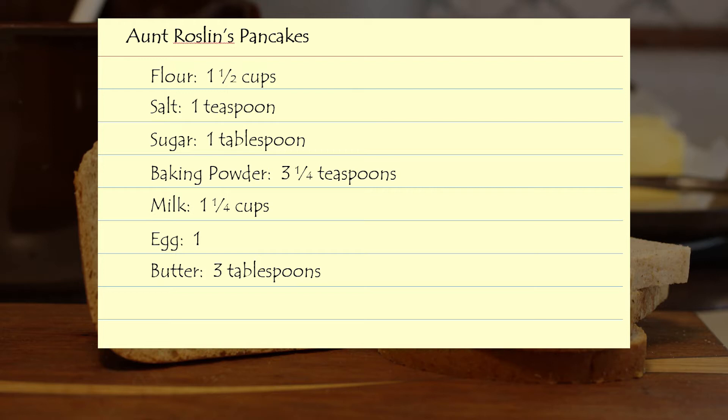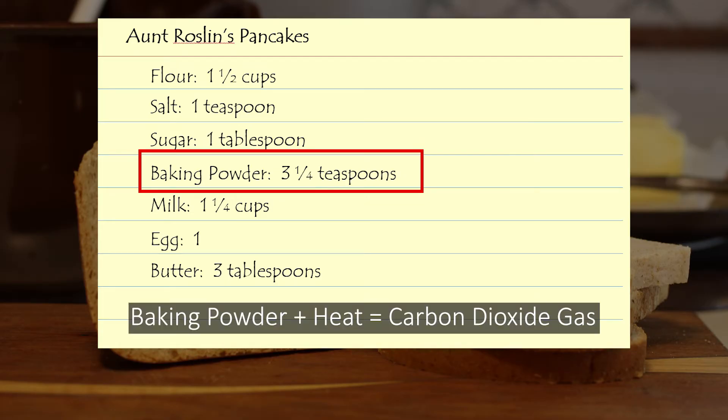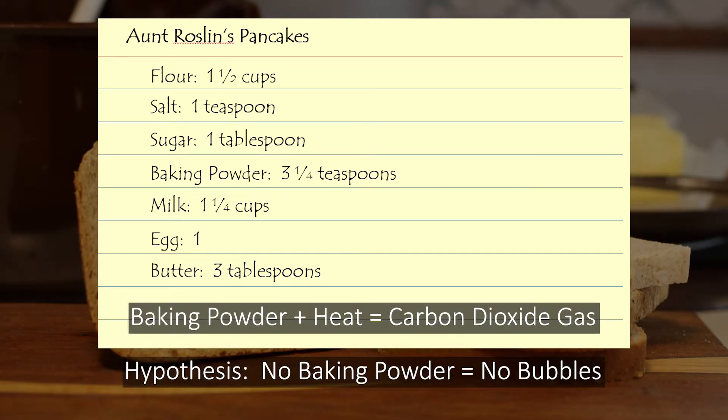In our example, if you did some research on the pancakes' ingredients, you might find that one of them, baking powder, gives off carbon dioxide when it's heated. Therefore, we could hypothesize that pancakes made without baking powder will not form bubbles.